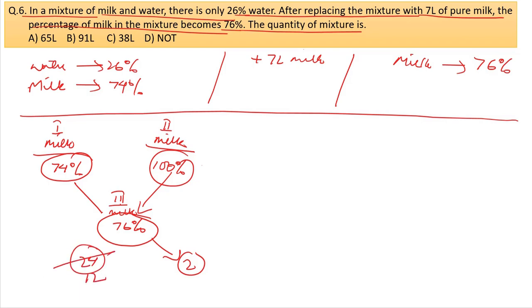One unit equals 7 liters of pure milk. Total quantity is 1 plus 37 equals 38 units. So 38 times 7 equals 266, but that's not matching. Let me recalculate: it should be 13 units total, so 13 times 7 equals 91 liters. The answer is option B.